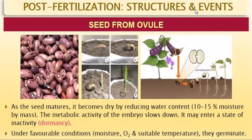As the seed matures, it becomes dry by reducing its water content. A mature seed retains only about 10–15% moisture by mass. Due to this dehydration, the metabolic activity of the embryo slows down, and the seed may enter a state of inactivity called dormancy. Dormancy is the stage where metabolic activity slows down significantly.